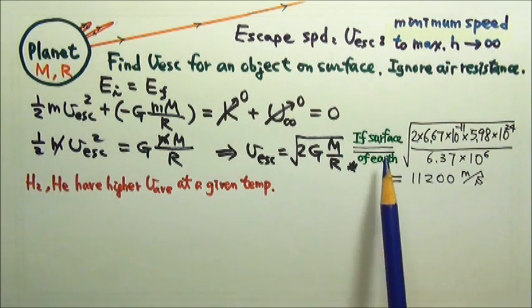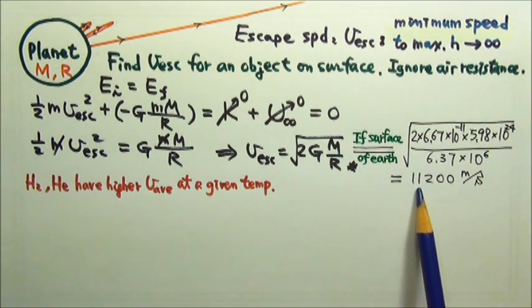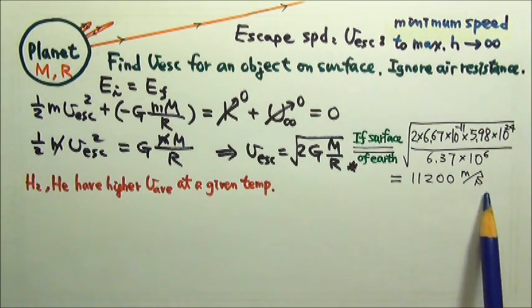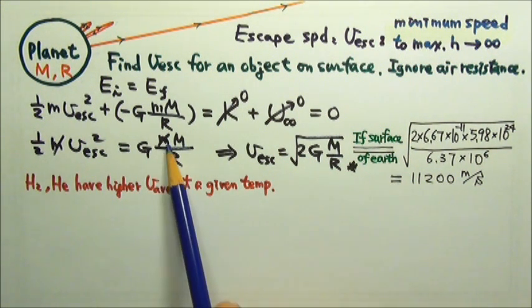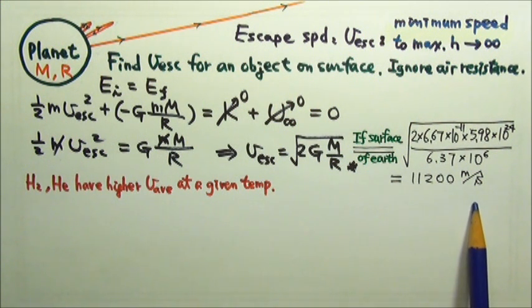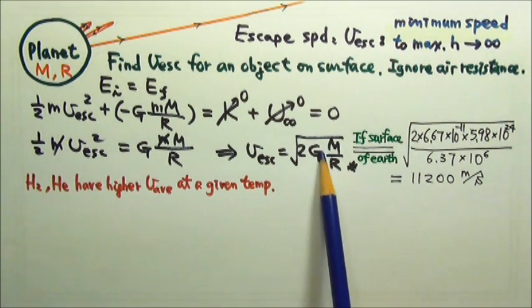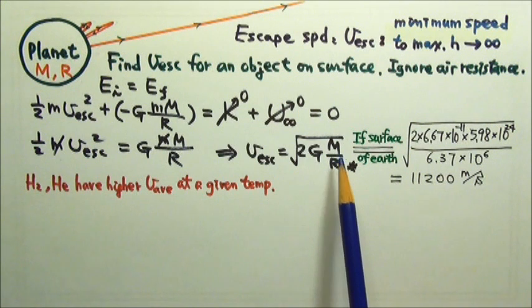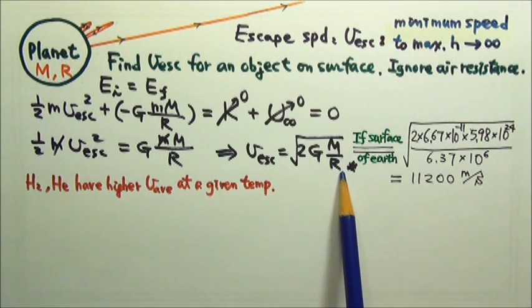If this planet is the Earth, we would get 11,200 meters per second escape speed. Notice that the little m canceled. So the escape speed does not depend on the mass of the object. It only depends on the mass of the planet and the distance to the center of the planet.